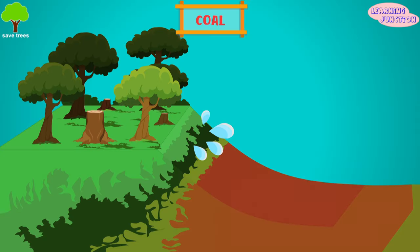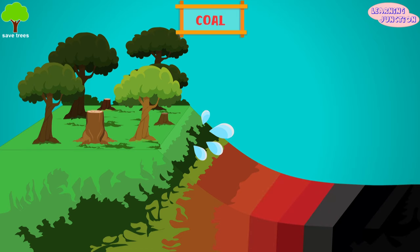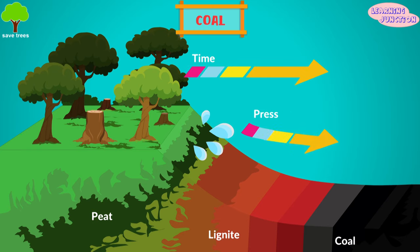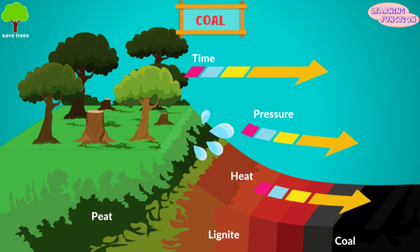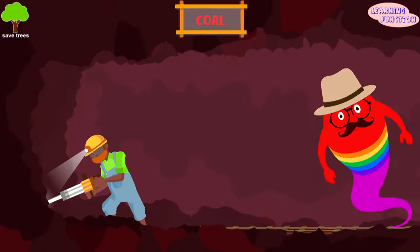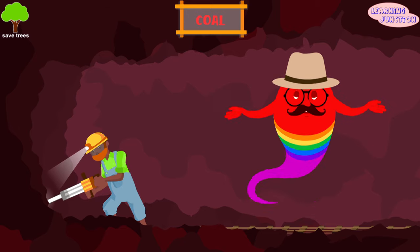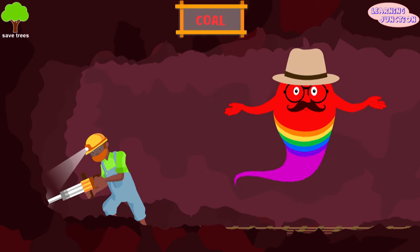For many years, a layer of dead plants at the bottom of the swamps was covered by layers of dirt, dust and water, trapping the energy of the dead plants. The heat and pressure from the top layers help the plant remains to turn into coal. We extract coal by mining it.